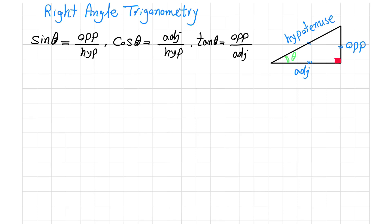We also have cotangent of theta, which is the inverse of tangent of theta, and is defined as the adjacent side divided by the opposite side.